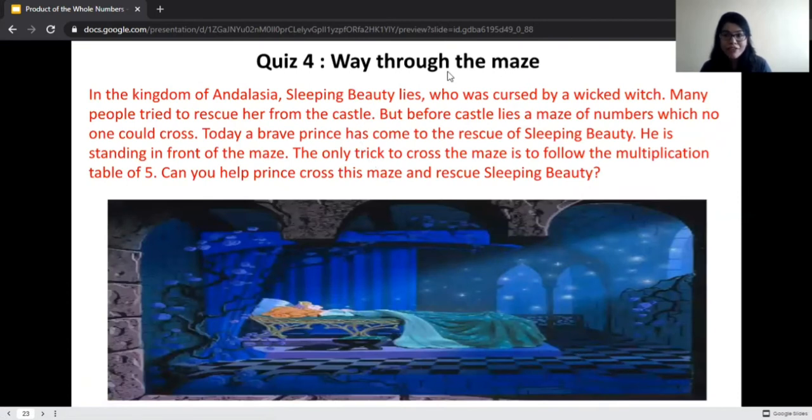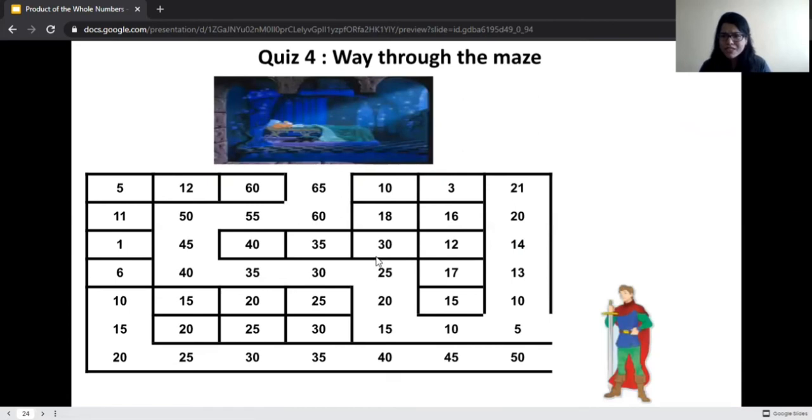Next, we have to find our way to the maze. In the kingdom of Andalusia, sleeping beauty lies who is cursed by a wicked witch. Many people have tried to rescue her from the castle. But before the castle lies a maze of numbers which no one could cross. Today, a brave prince has come to the rescue of sleeping beauty. He is standing just in front of the maze. The only trick to cross the maze is to follow the multiplication table of five. Isn't that interesting? Let us help the prince cross this maze and rescue sleeping beauty. This is the maze which lies in front of the castle of sleeping beauty. Which path should he take? Can you think of something?